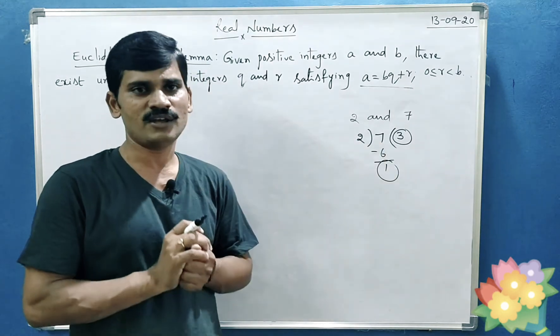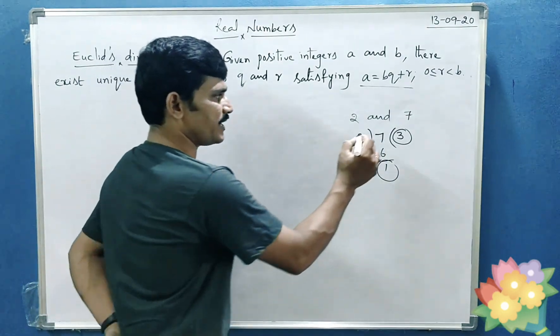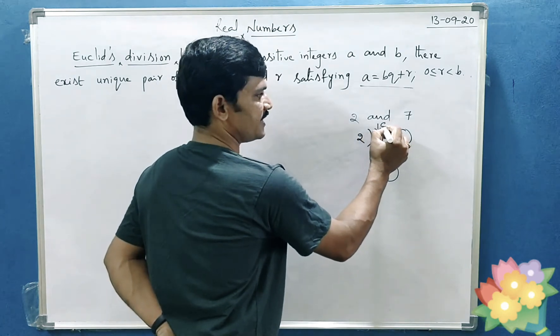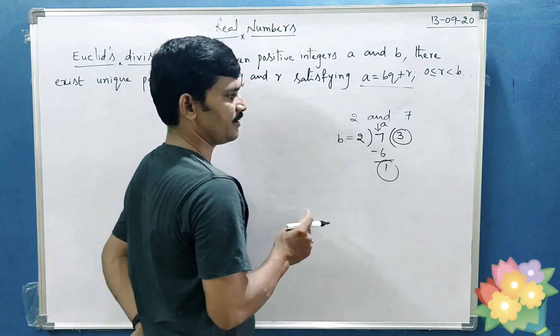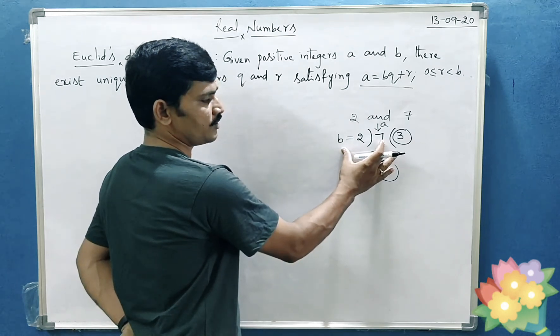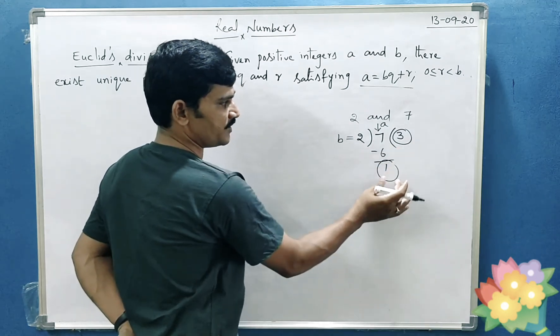This is what Euclid's division lemma says. We have taken A and B. This is A and this divisor is B. Regarding these two, you are getting two more positive integers.